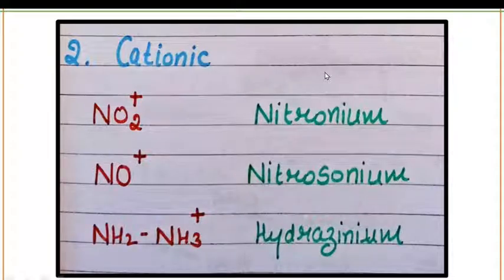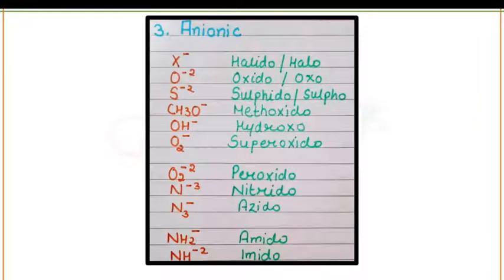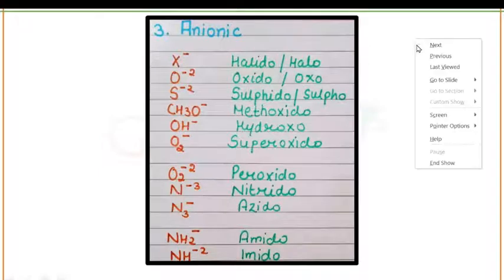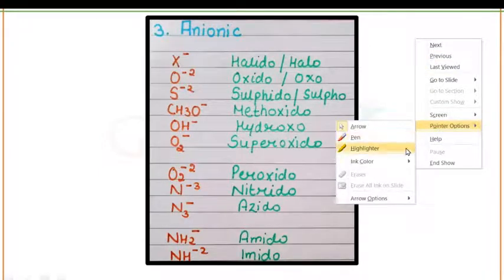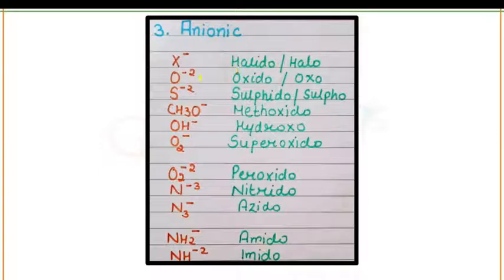The cationic ligands end with the suffix -ium. Number three is the anionic monodentate ligands. The most important examples of anionic monodentate ligands are: O2- that is oxido or oxo, and O2- that is superoxido.